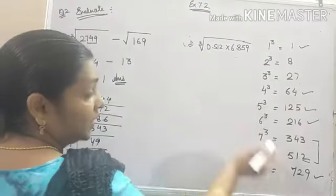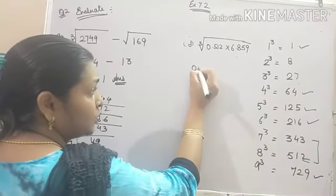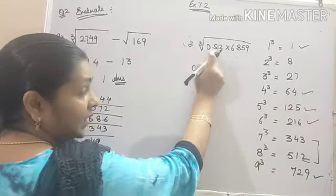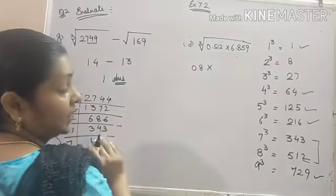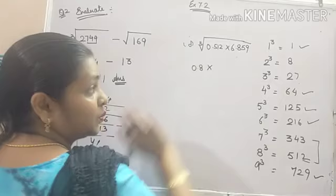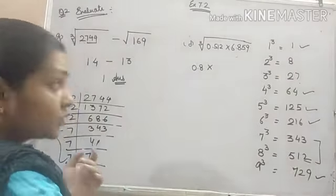Now we will check for this. It is 512. We know that 512 is cube of 8 and decimal places get 1 third. So it will be 0.8.